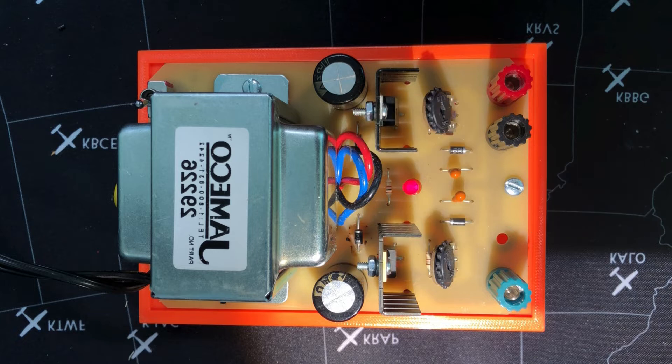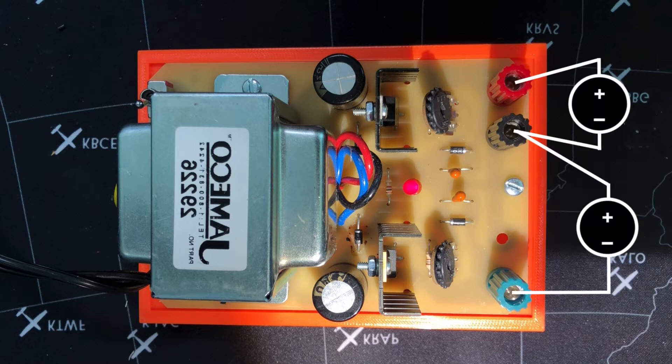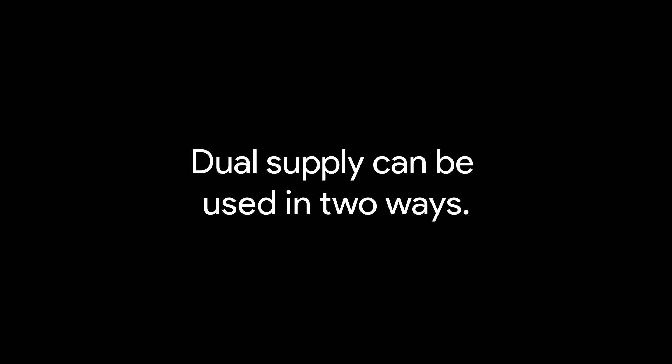You can think of the dual supply as consisting of essentially two voltage supplies. Each supply can source plus or minus 15 volts, and each is adjusted using its potentiometer. In this manner, we can use the dual power supply in two different ways.